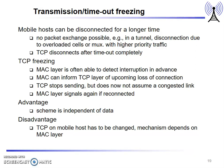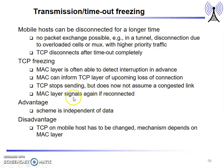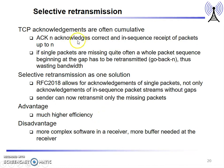With TCP freezing, the MAC layer can detect interruption in advance and inform the TCP layer of an upcoming loss of connection. Because it is informed well in advance, TCP can stop sending packets without assuming a congested link. The MAC layer signals again when there is a reconnection. The advantage is that this mechanism is independent of data. The disadvantage is that TCP on the mobile host has to be changed, as the mechanism depends on the MAC layer.